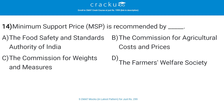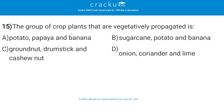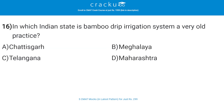Minimum Support Price (MSP) is recommended by dash — the correct answer is B — the Commission for Agriculture Cost and Prices. The group of crop plants that are vegetatively propagated is — the correct answer is B — sugarcane, potato, and banana. These three are reproduced by vegetative propagation, which is a type of asexual reproduction in which new plants are produced from the root system, leaf, and buds.